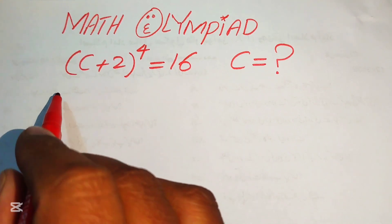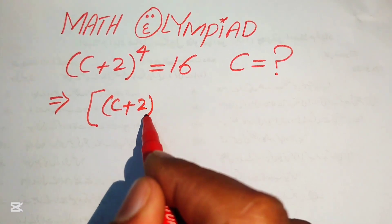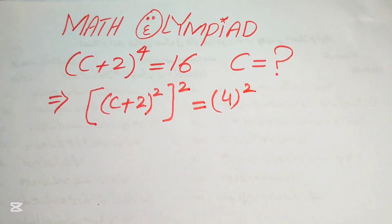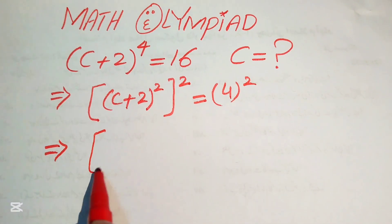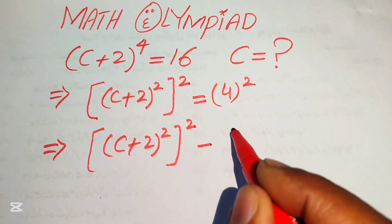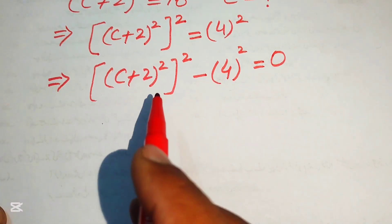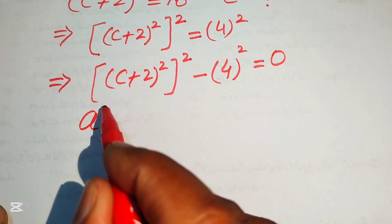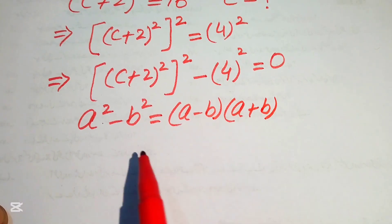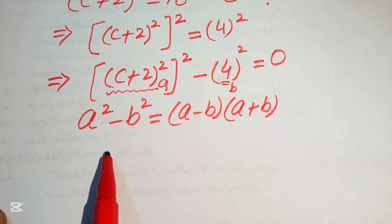The first step is to rewrite the equation by breaking the exponent: we write (C + 2)^4 as ((C + 2)²)², and we write 16 as 4². We then move 4² to the left-hand side, obtaining ((C + 2)²)² - 4² = 0. Now we apply the algebraic formula a² - b² = (a - b)(a + b), where a = (C + 2)² and b = 4.